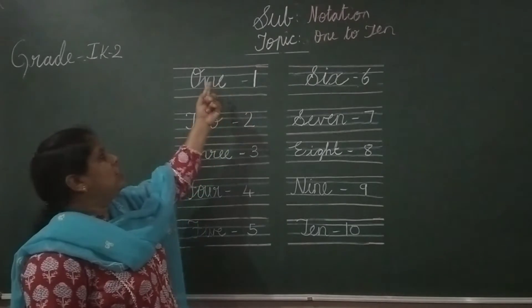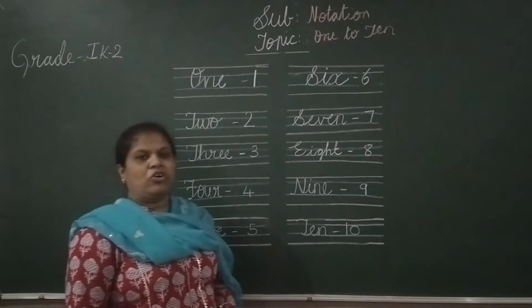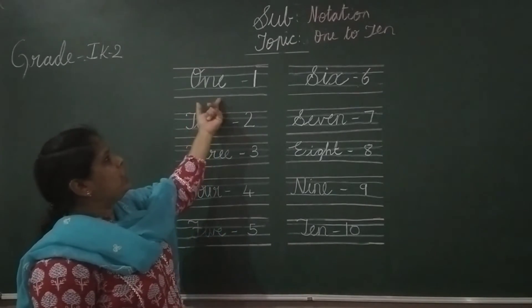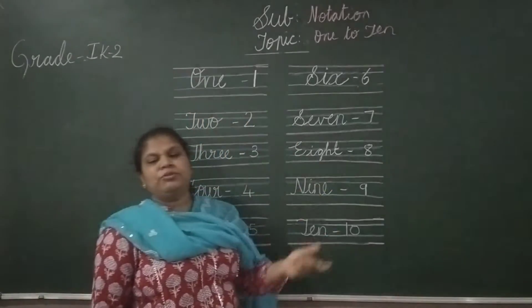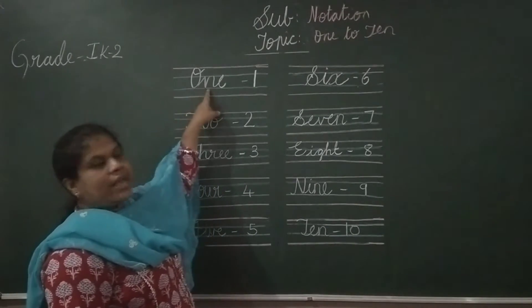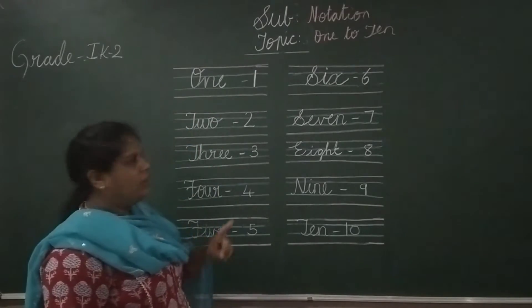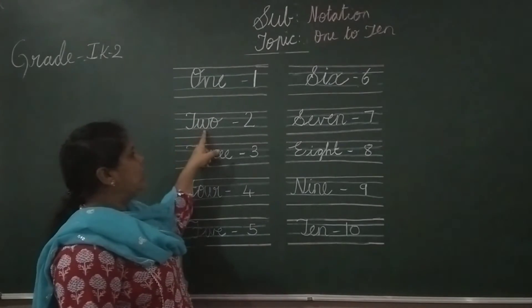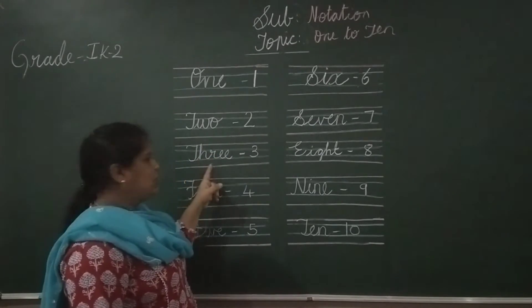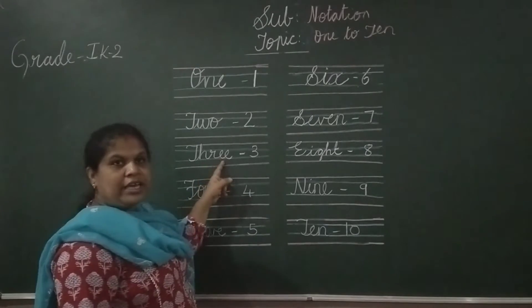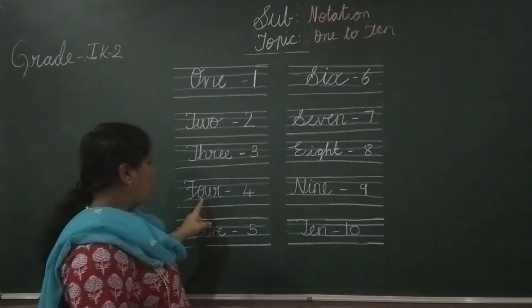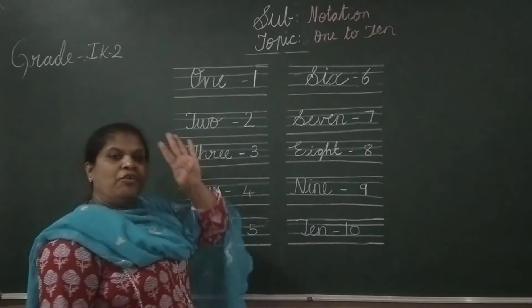The numbers which are written in words are called as notation. Once again: O, N, E — 1. T, W, O — 2. T, H, R, E, E — 3. F, O, U, R — 4.